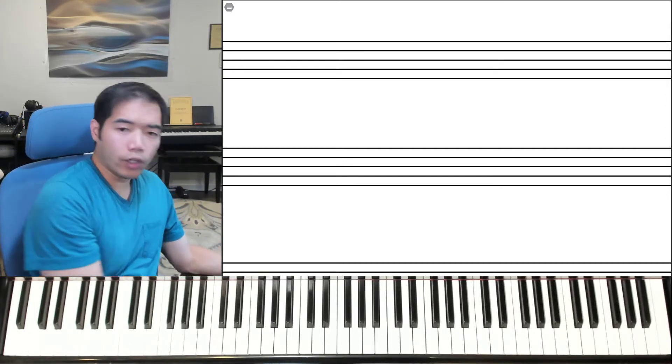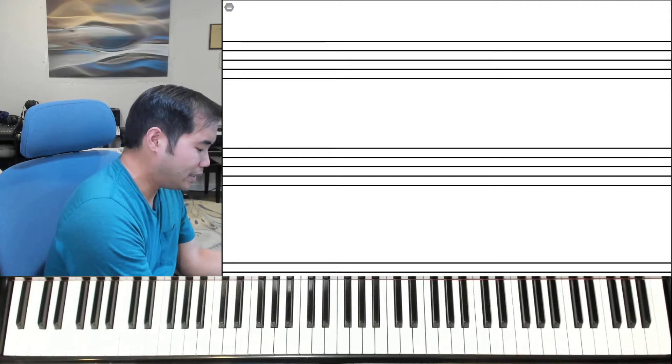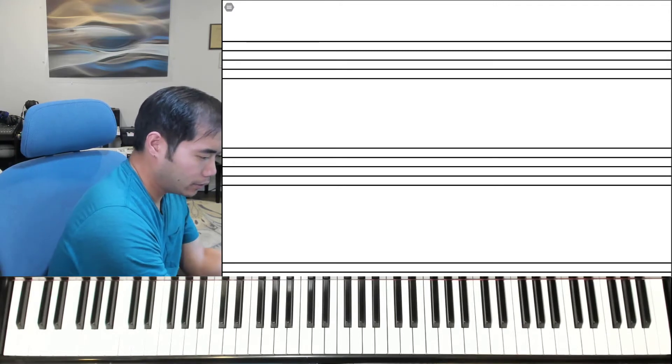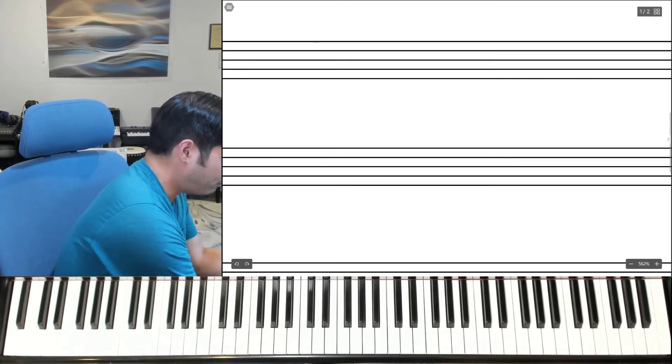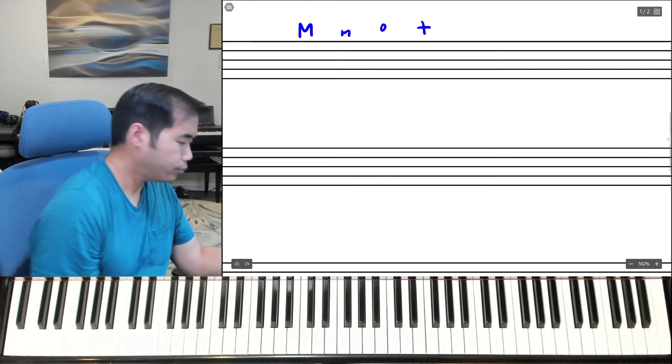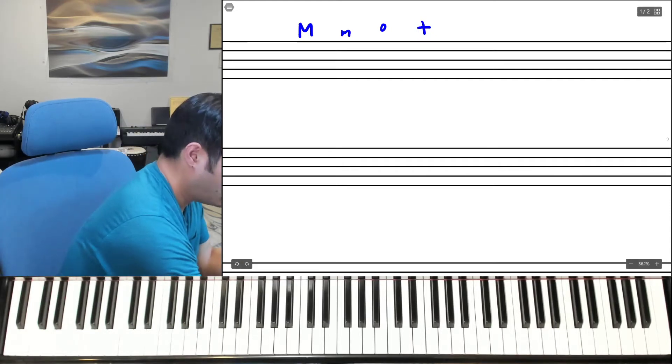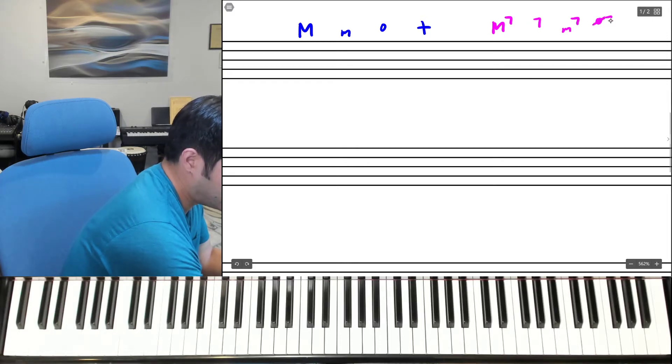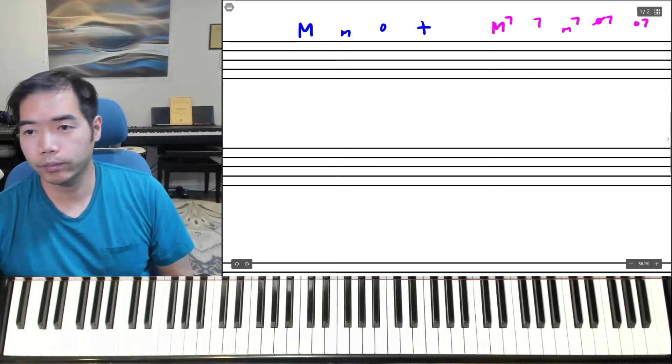Starting off, let's take a look at triads. We have many different types of triads: major triad, minor triad, diminished triad, and augmented triad. With seventh chords, we have the major seven, major minor seven, minor seven, half diminished seven, and diminished seven chords.